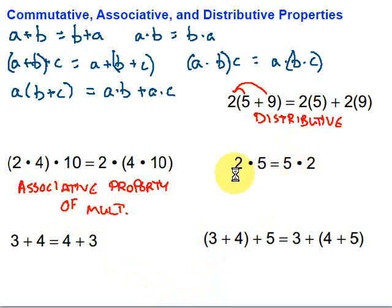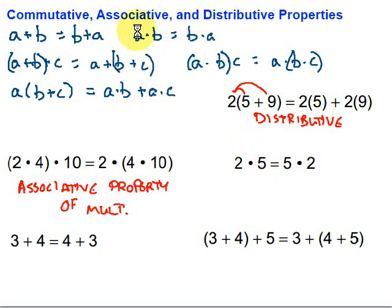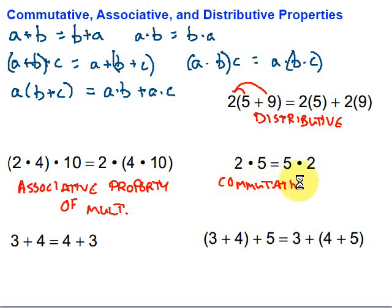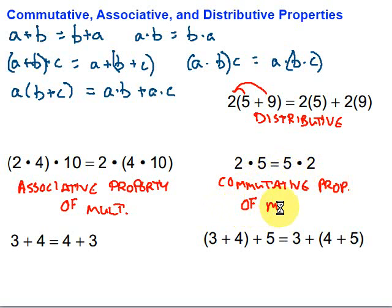Let's look at this one. What's the difference between the two sides? On the left we have 2 times 5; on the right we have 5 times 2. The difference is the order — the order has been changed. That looks like the commutative property. Since we're multiplying, it's the commutative property of multiplication. To commute is to move, so we have those numbers moving around.